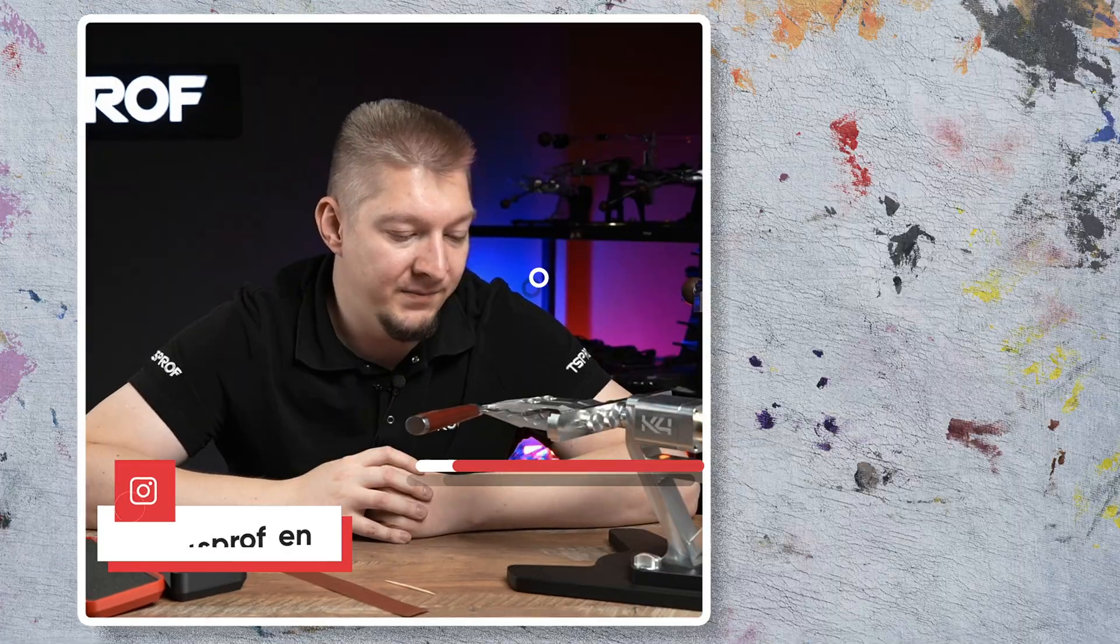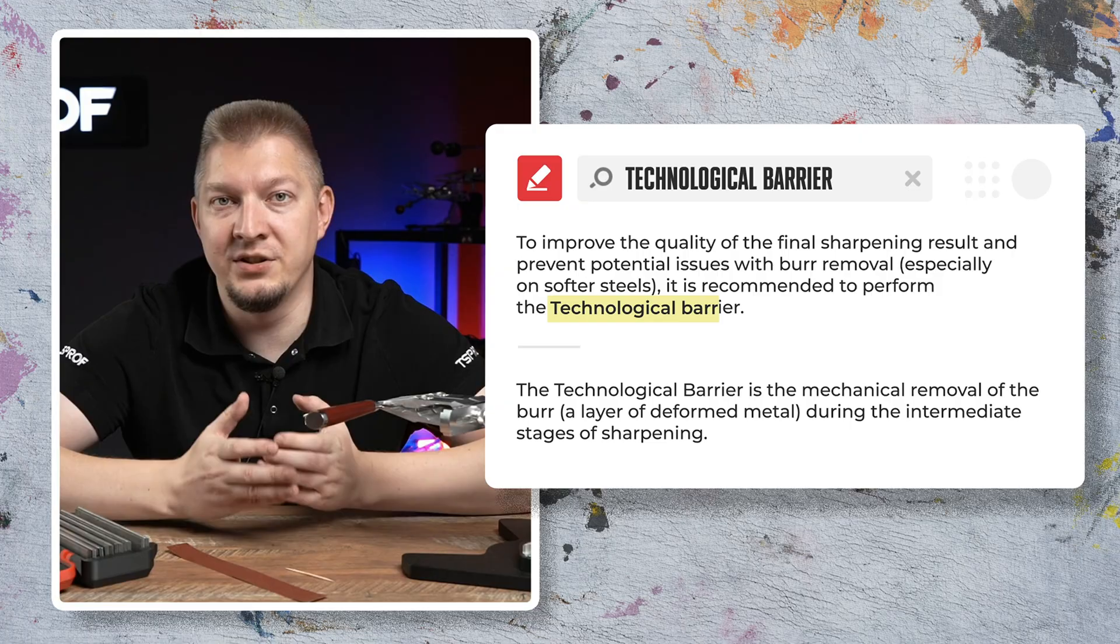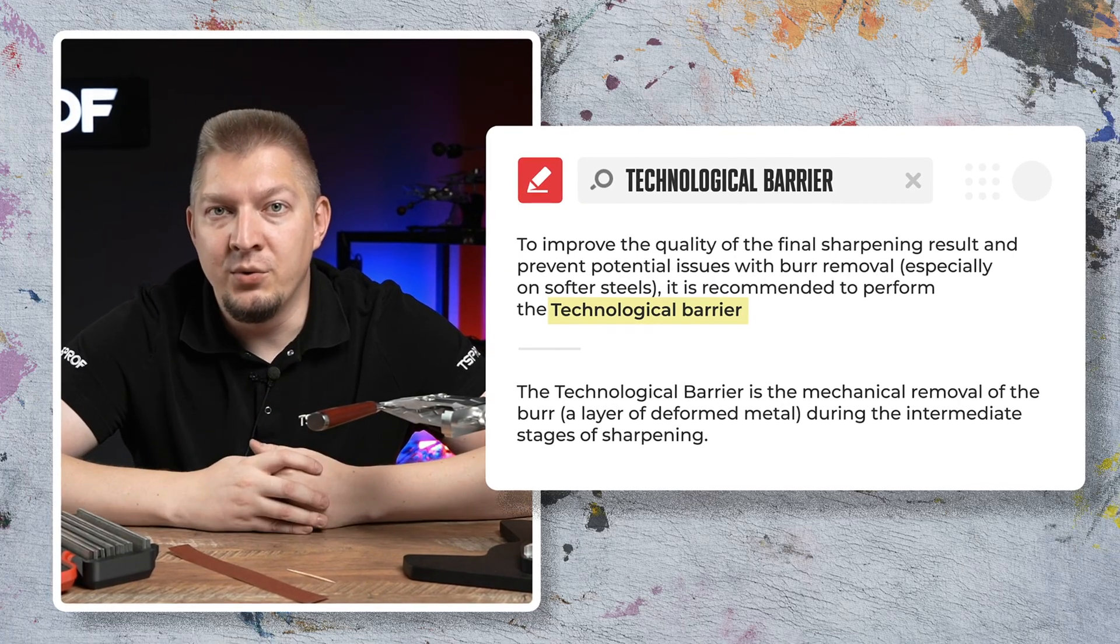Right now we're sharpening a kitchen knife. As a rule, a technological barrier is needed for simple knives with poor heat treatment. What is poor heat treatment?